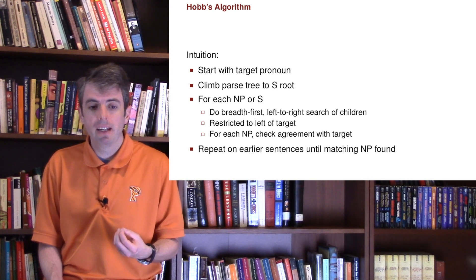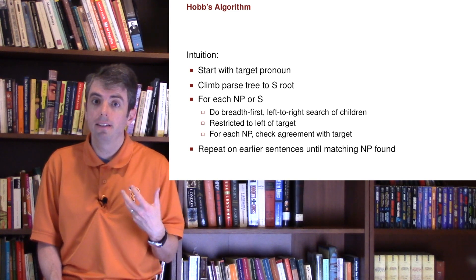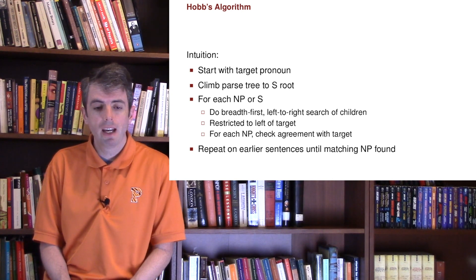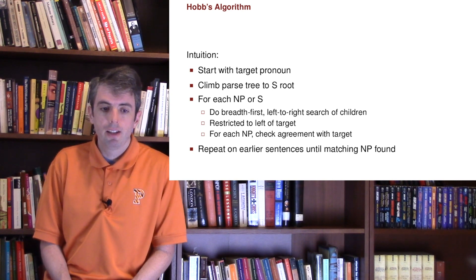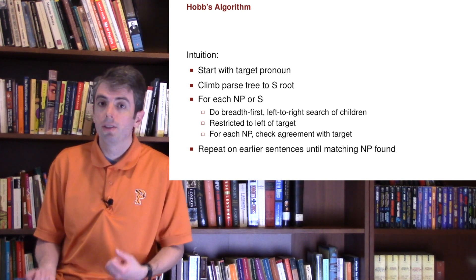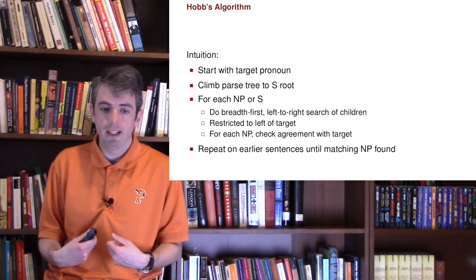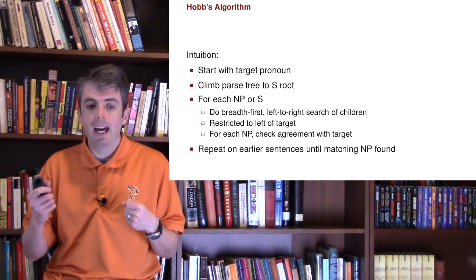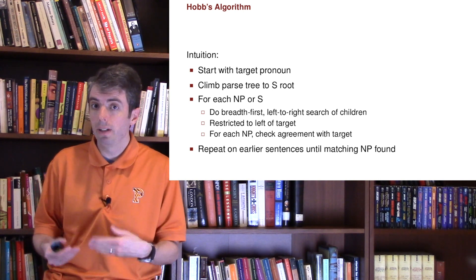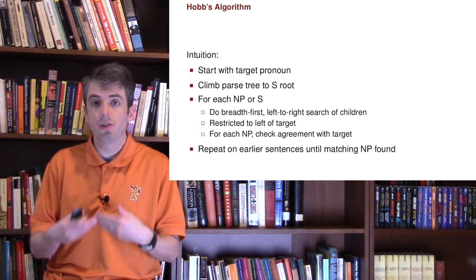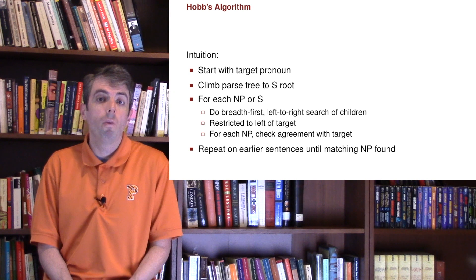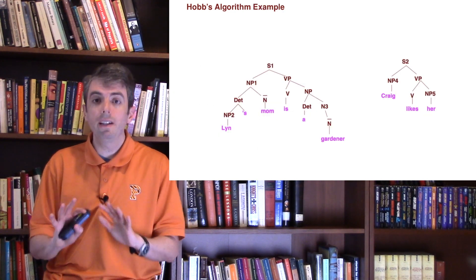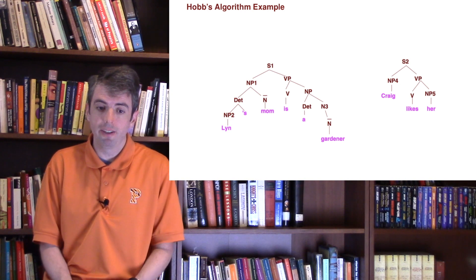What the algorithm says to do is: first find the pronoun referring to some entity, then search for each sentence or noun phrase, going left to right, breadth first, and see if it agrees in number and gender with the pronoun, and keep doing that until you find it. This is a really simple algorithm, but it works relatively well.